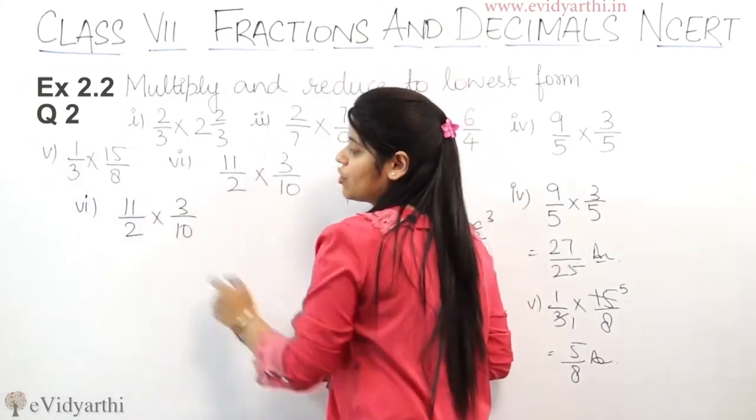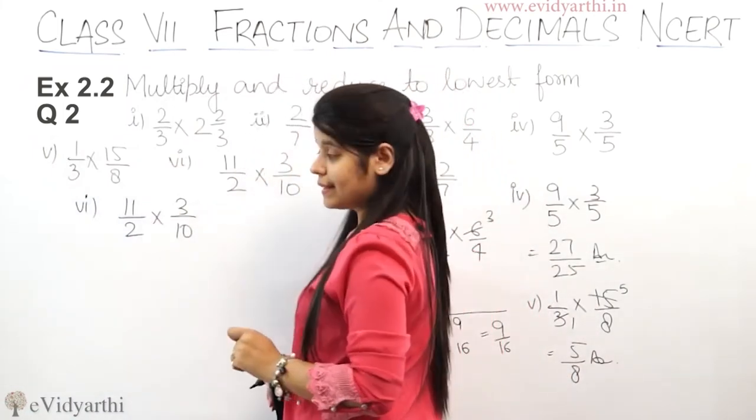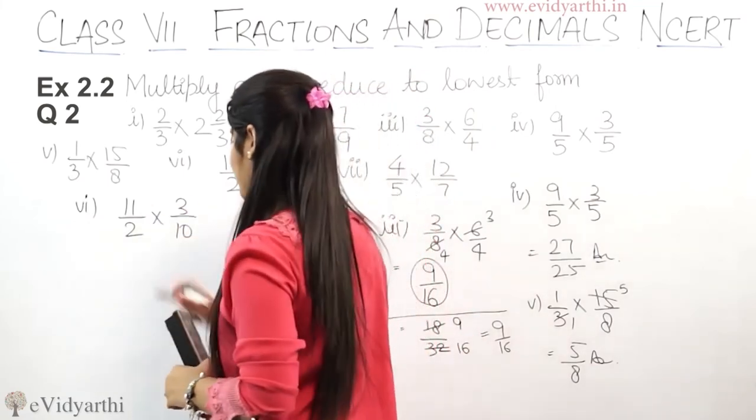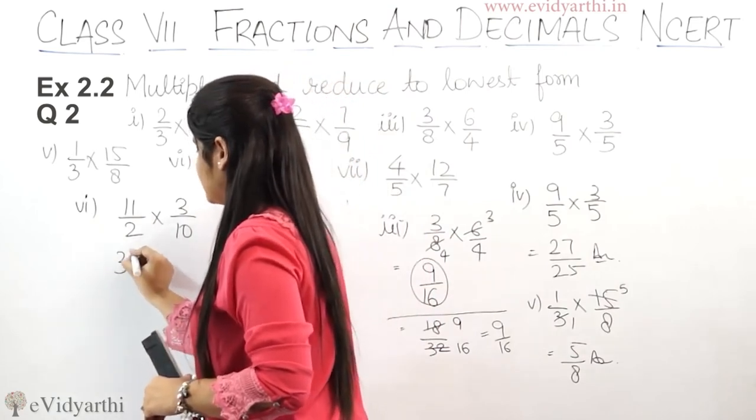Now if not 11 or 2 is cut, not 3 or 10 is cut, not diagonally cut. So we will multiply. So 11 into 3 is 33.